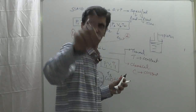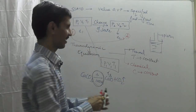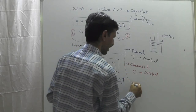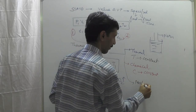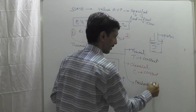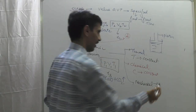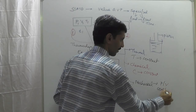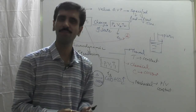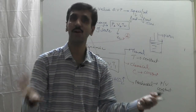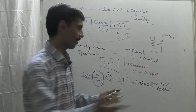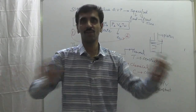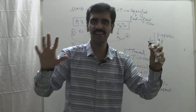The third and last is mechanical equilibrium. When we talk about mechanical equilibrium, we talk about pressure or volume being constant. Sometimes we carry out a process at constant pressure, sometimes at constant volume, and accordingly we call that process to be under mechanical equilibrium.